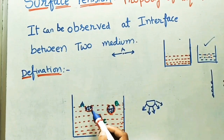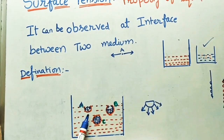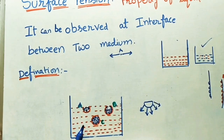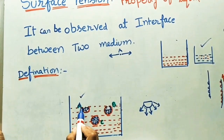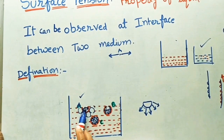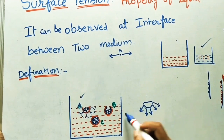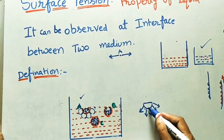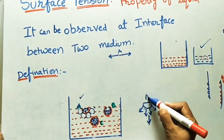Molecule A is only half inside the liquid. Now, it is surrounded by molecules of the liquid. Because of these surrounding molecules, there are attractive forces — cohesive forces — acting on molecule A. The resultant of all these forces is in the downward direction. Because of this downward resultant force, molecule A will try to move in the downward direction.